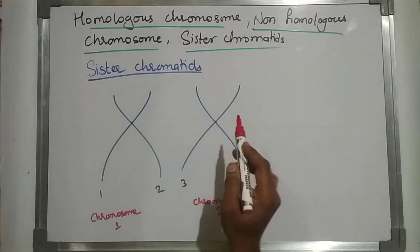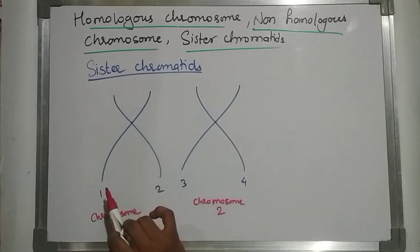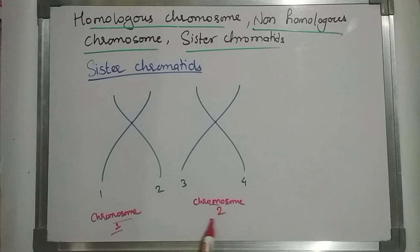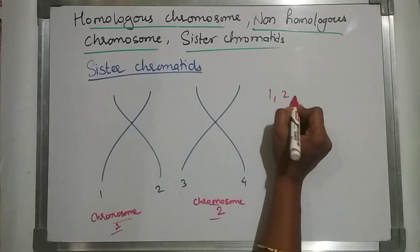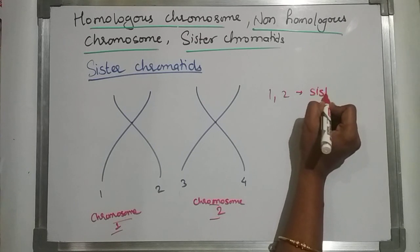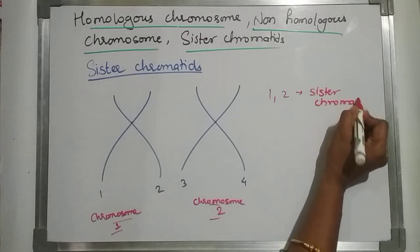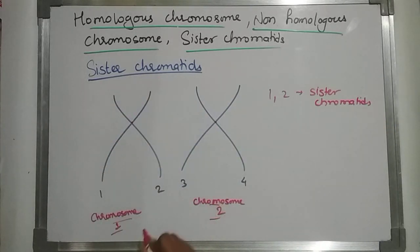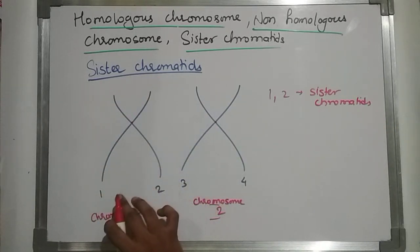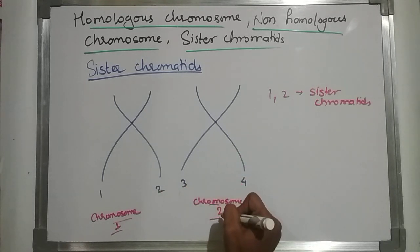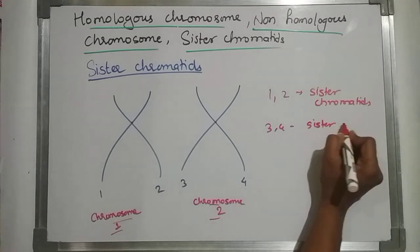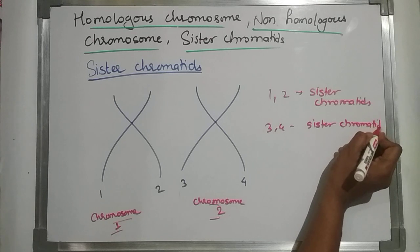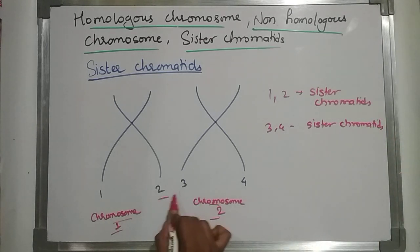Now we will see sister chromatids and non-sister chromatids. This is chromosome one and this is chromosome two — a homologous pair. Chromatid 1 and chromatid 2 from chromosome one are sister chromatids. From one chromosome, the two chromatids are called sister chromatids. Similarly, chromatid 3 and chromatid 4 from the second chromosome are also called sister chromatids.